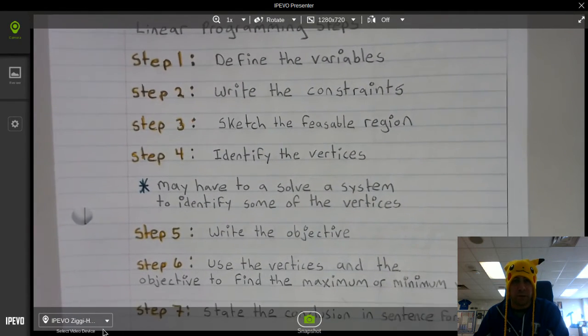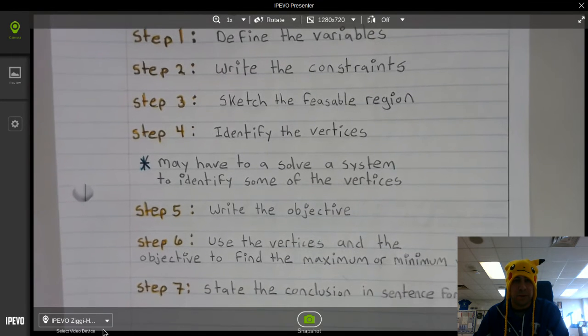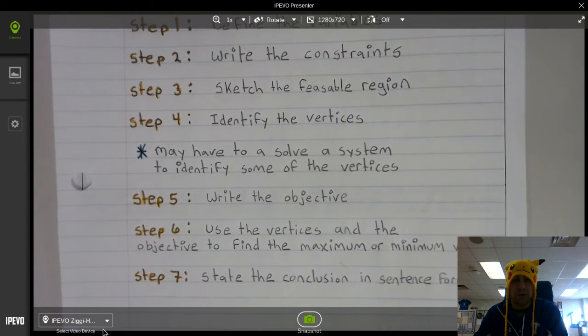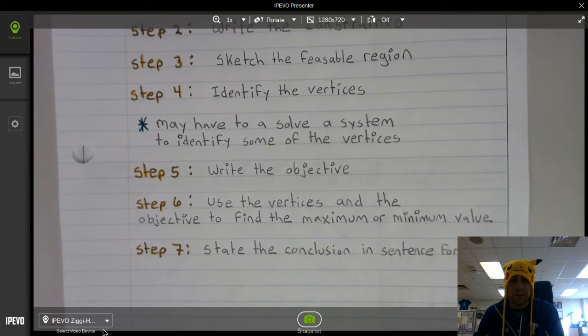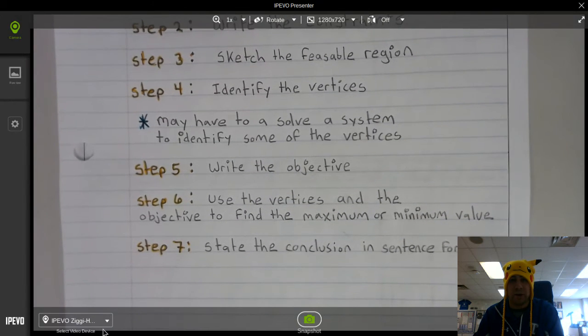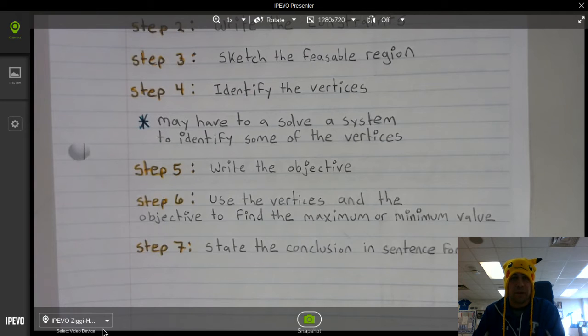Step five is to write the objective. Step six is to use the vertices and the objective to find the maximum or minimum value. And step seven is to state the conclusion in sentence form. So if you would, pause a moment and update your notes.